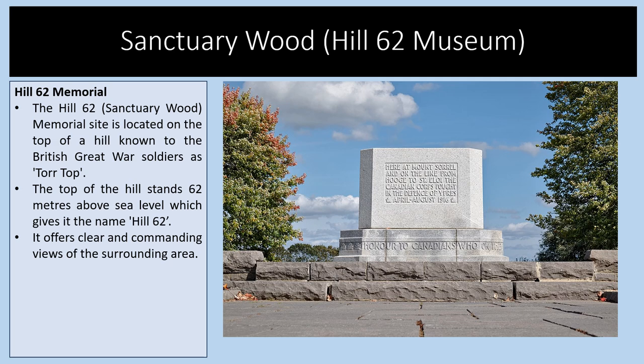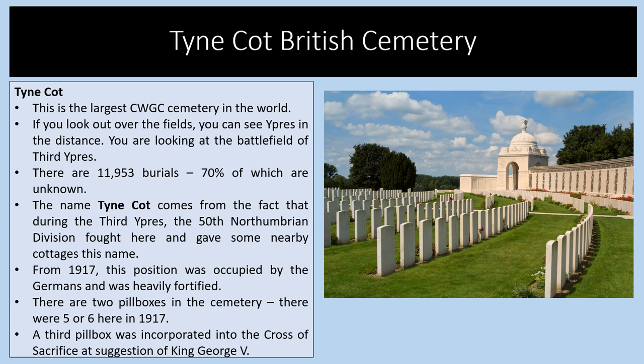Here is a cross-section of a typical First World War trench showing the dugout, sandbags at the top, duckboard, fire step, and ammunition shelf. The front of the trench was known as the parapet, with barbed wire and no man's land beyond. The Hill 62 Sanctuary Wood Memorial site is located on top of a hill known to British soldiers as Tor Top, standing 62 metres above sea level — which gives it the name Hill 62 — and offers a commanding view of the surrounding area.